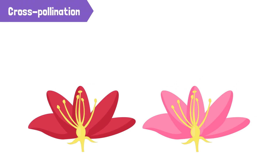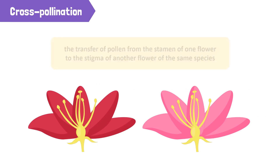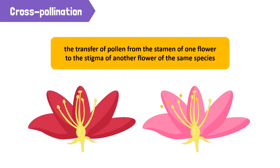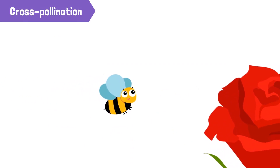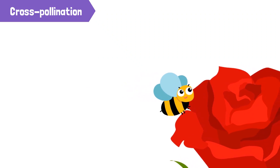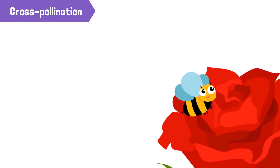When pollinators transfer pollen from the stamen of one flower to the stigma of another flower of the same species, it is called cross-pollination. Cross-pollination requires pollinators such as honeybees.